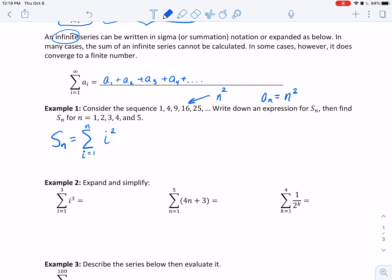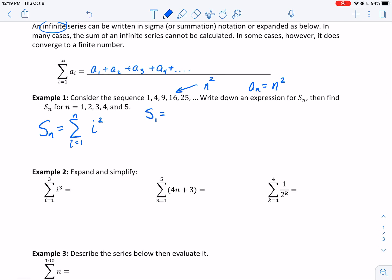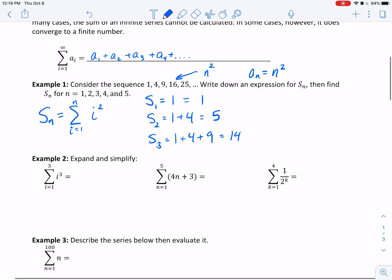Then s_1 is going to be the sum of just the first term. The first term is 1, so s_1 equals 1. s_2 equals the first term plus the second term, which equals 5. s_3 is the first plus second plus third term, which is 14. s_4 equals 1 plus 4 plus 9 plus 16, which is 30. And s_5 equals the previous bit plus 25 more, which is 55.